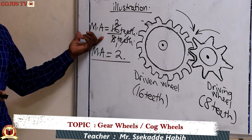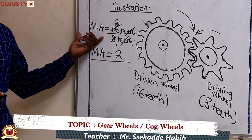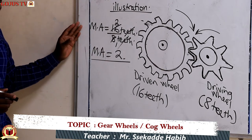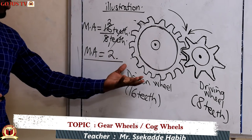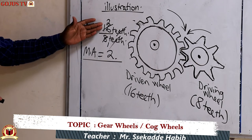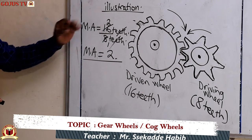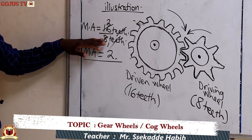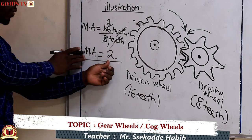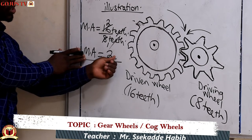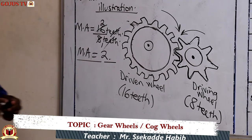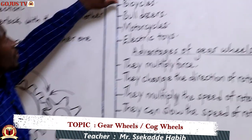The same approach applies when finding the number of revolutions or rotations made by the wheels. You simply take the number of teeth of the driven wheel divided by the number of teeth of the driving wheel, and what you get is the number of rotations or revolutions.